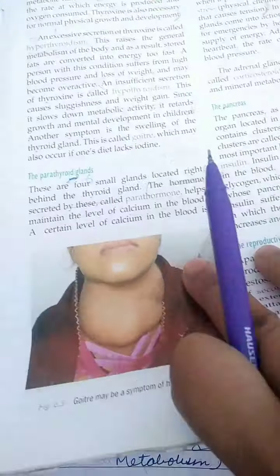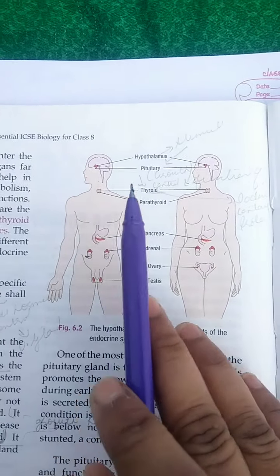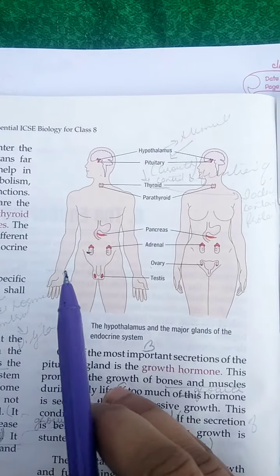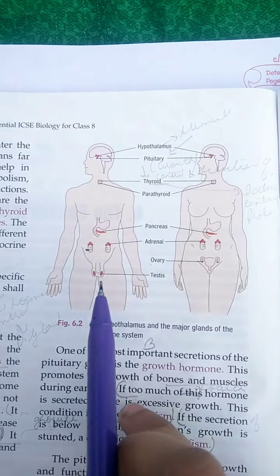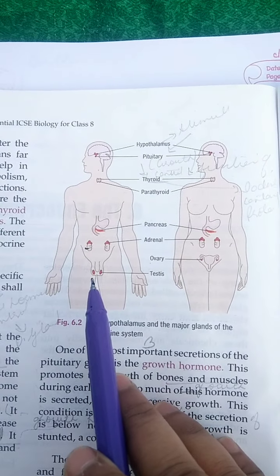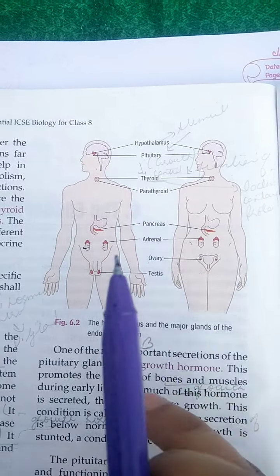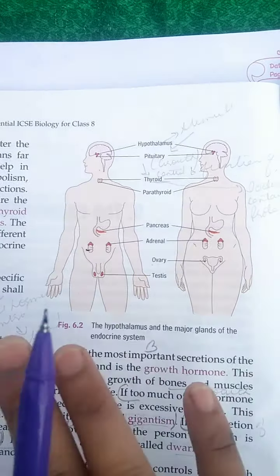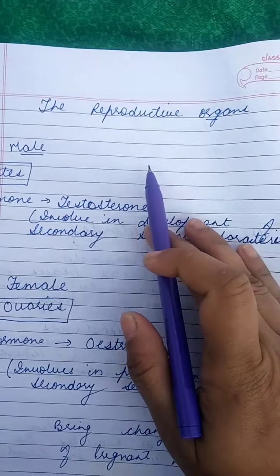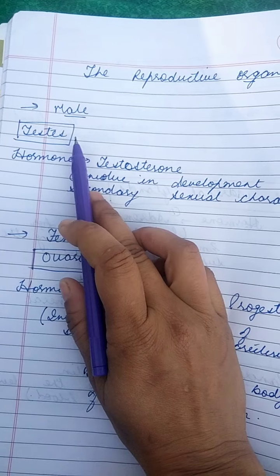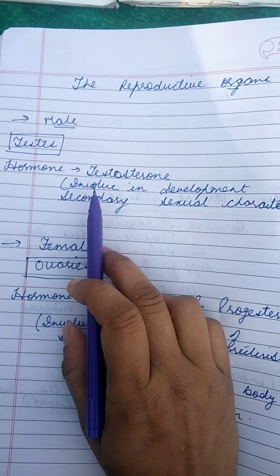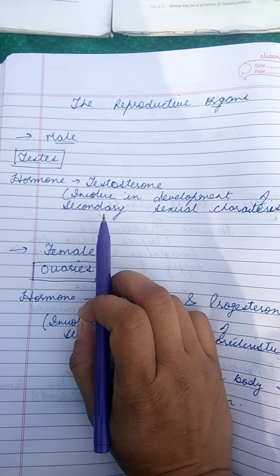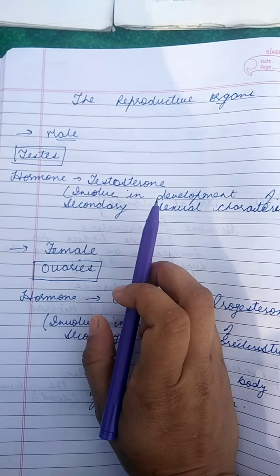Next are the reproductive organs. In males and females there are different reproductive organs which you have already studied. The hormones secreted by them are also different. Males have testes and females have ovaries. The testes, a pair, secrete testosterone, which is involved in the development of secondary sexual characteristics that further help in reproduction.